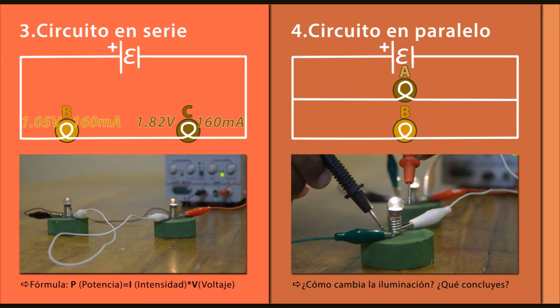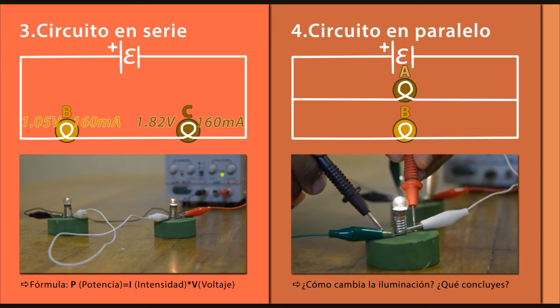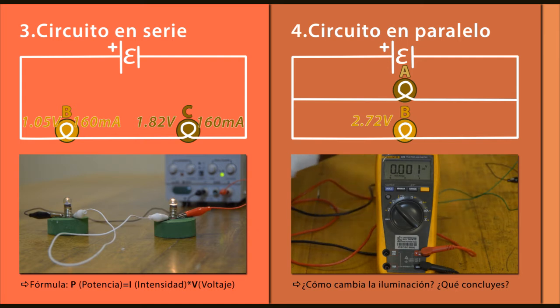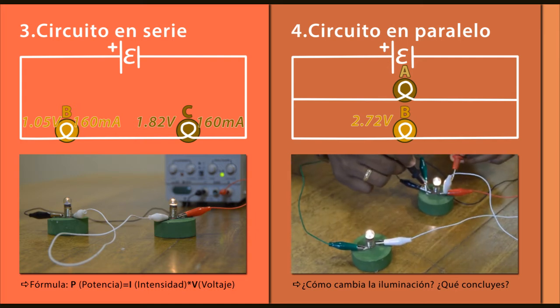Medimos de nuevo con el multímetro las respectivas corrientes y diferencias de potencia por cada bombillo y calcularemos la potencia disipada.